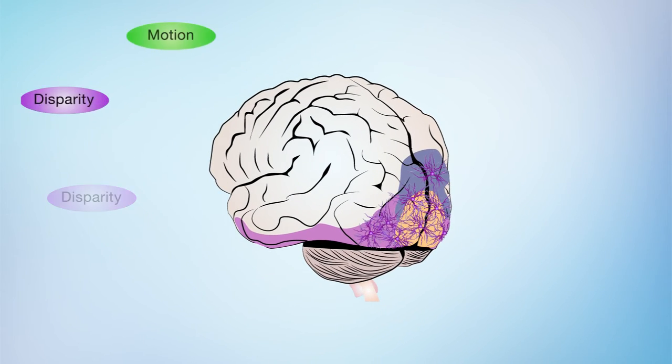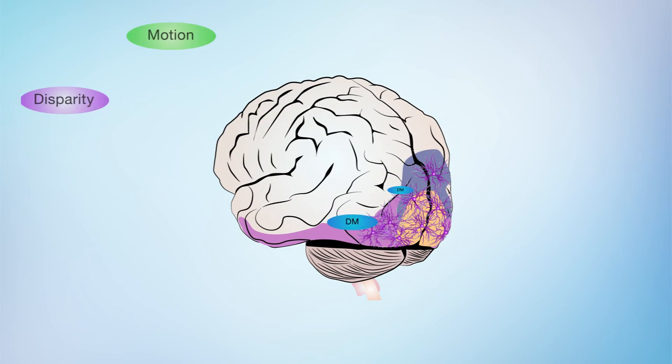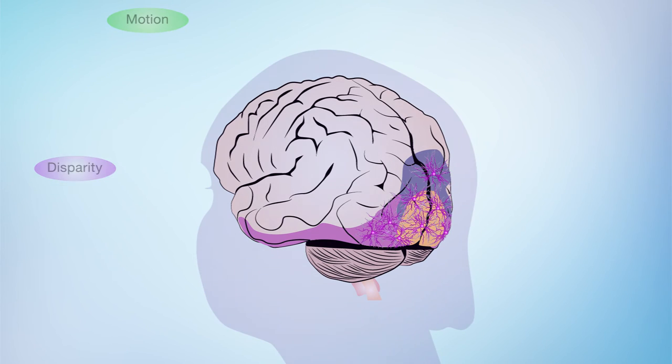Other scientists studying where the brain integrates multiple visual cues have found a particular role for an area of the visual cortex that takes a long time to fully develop. Young children who fail to fuse cues the same way adults do have differences in these regions.